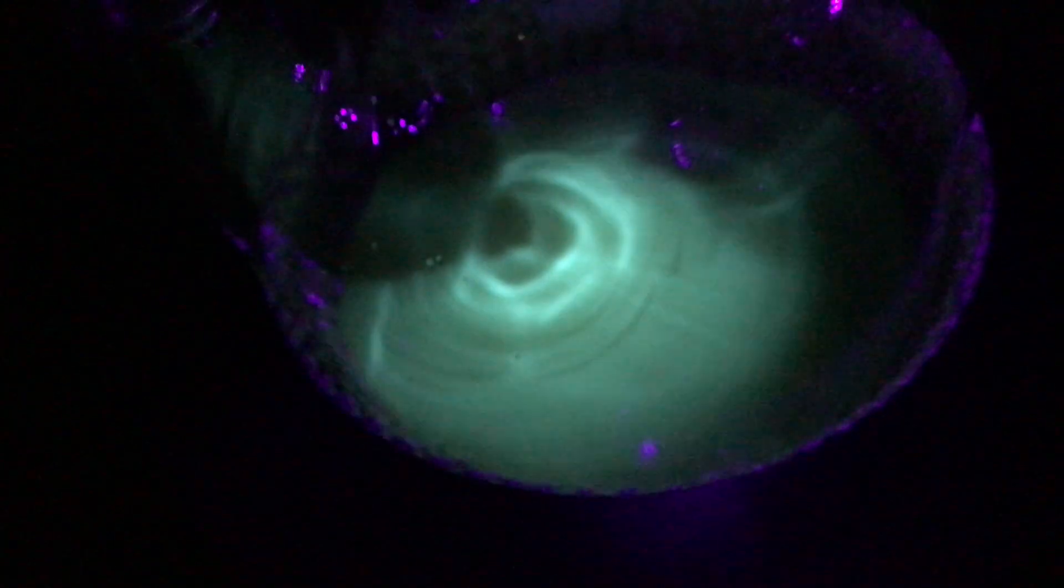While fooling around with a UV light for a different upcoming project I noticed that the extracted liquid and the seeds glowed under ultraviolet light. As tropane alkaloids are not fluorescent, the fluorescence seems to come from some other unknown contaminant in the seeds. It surely looked beautiful though.